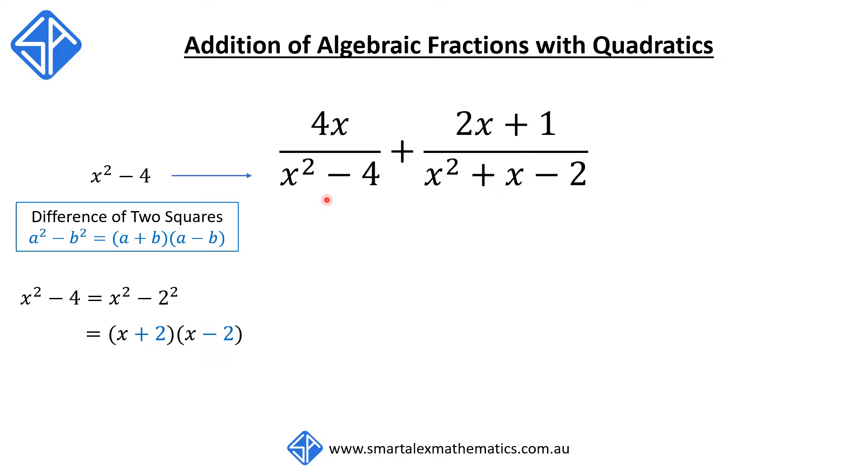So we can replace x squared minus 4 with x plus 2 times x minus 2. Next, we need to factorize x squared plus x minus 2. Now, this is a quadratic, and we can factorize it using the PSF method.